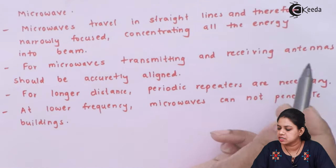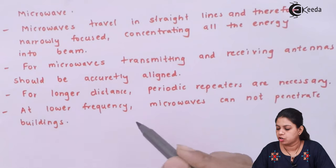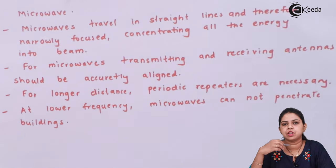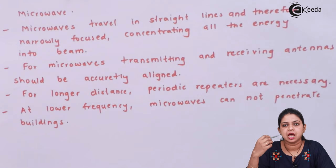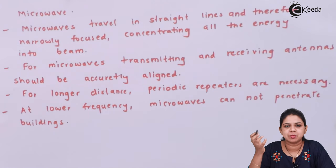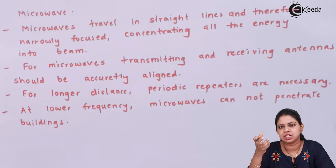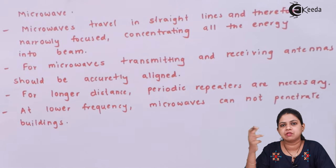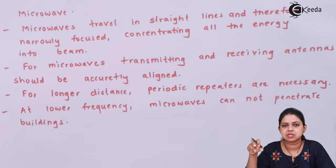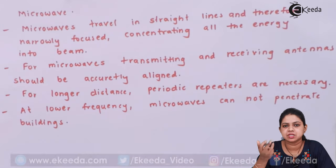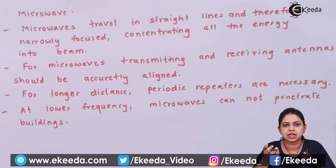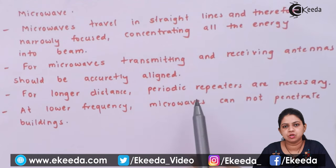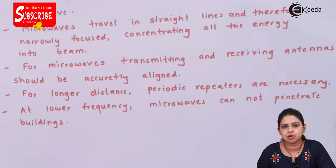For microwaves, the transmitting and receiving antennas should be accurately aligned. For longer distances, periodic repeaters are necessary because of attenuation — the loss of signal strength as the signal passes along the network. The signal can also be disturbed by various adverse atmospheric conditions, so repeaters are placed in between for longer distance microwave transmission.